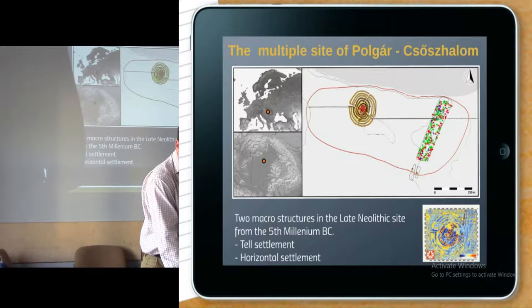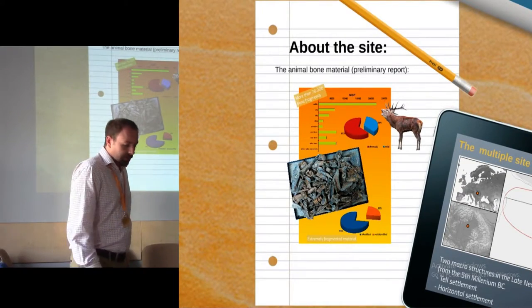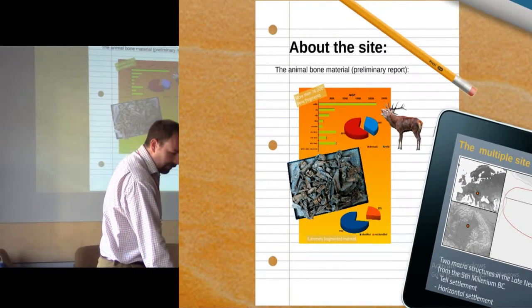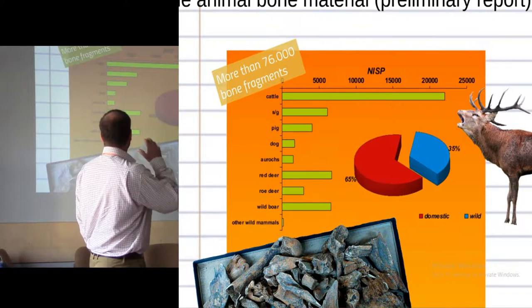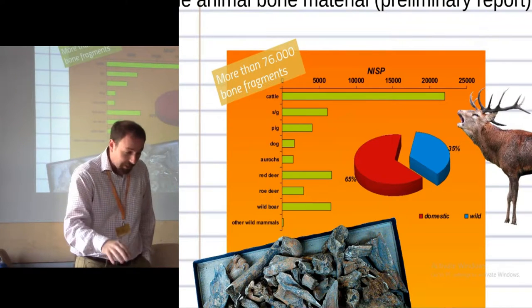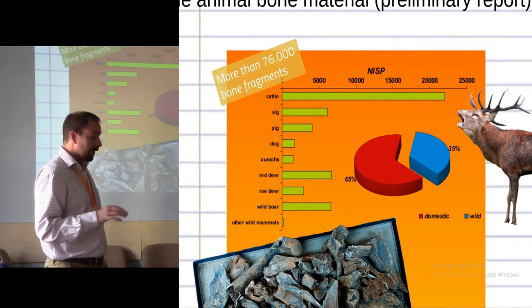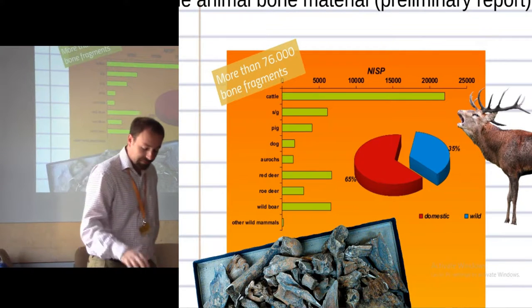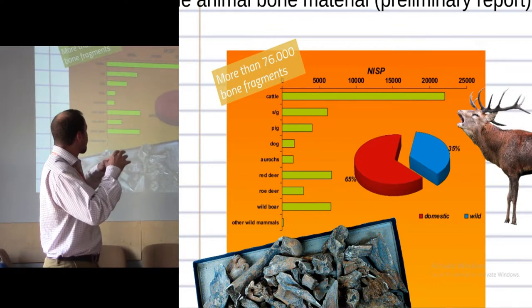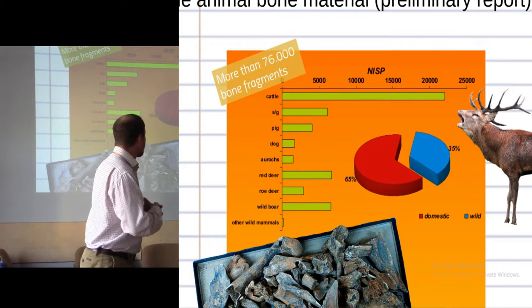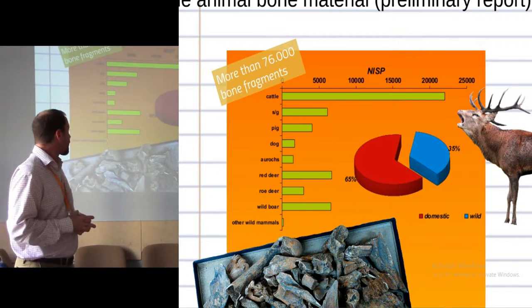I would like to speak only about the animal bone material because it's a huge amount. So this is about the preliminary report of the animal bone identification. Until now I identified more than 76,000 bone fragments and the analysis is not finished yet. But we can make a draft of the meat consumption of the late Neolithic period.